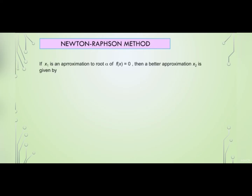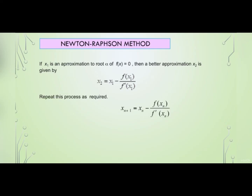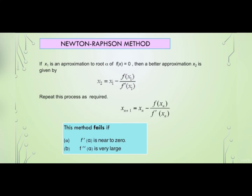Newton-Raphson method: If x₁ is an approximation to the root alpha of f(x) equals 0, then a better approximation x₂ is given by x₂ equals x₁ minus f(x₁) over f'(x₁). We repeat this process using the general formula: xₙ₊₁ equals xₙ minus f(xₙ) over f'(xₙ). This method fails if f'(alpha) is near 0 or f'(alpha) is very large.